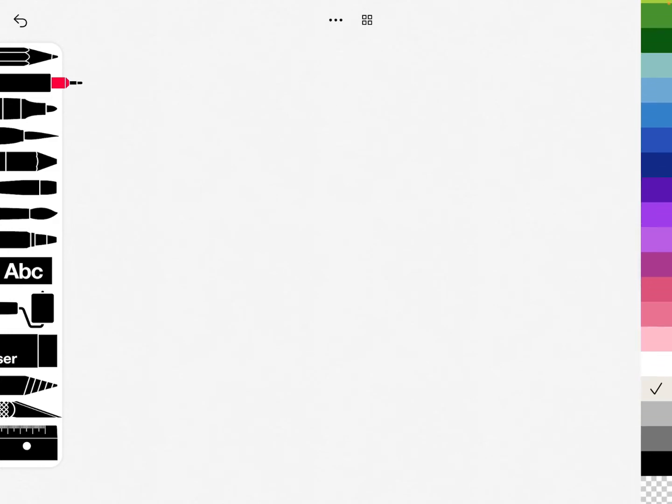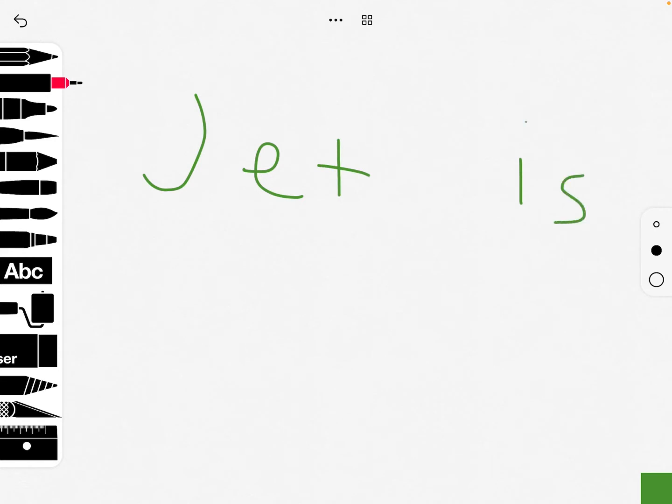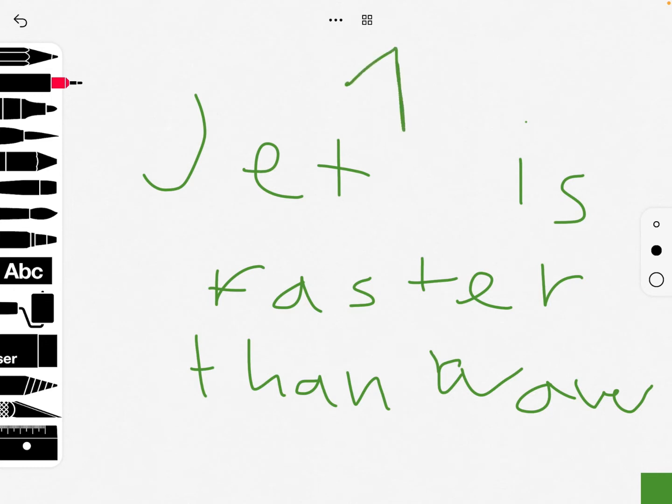So Jet is like really fast, faster than Wave, so I'll write in green because it's like one point. But Wave is like really awesome, so she gets one point as well. I'll write in purple.